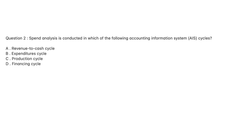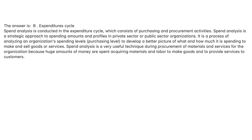Question 2. Spend analysis is conducted in which of the following accounting information system, AIS, cycles? A. Revenue to cash cycle. B. Expenditure cycle. C. Production cycle. D. Financing cycle. The answer is B, expenditure cycle.